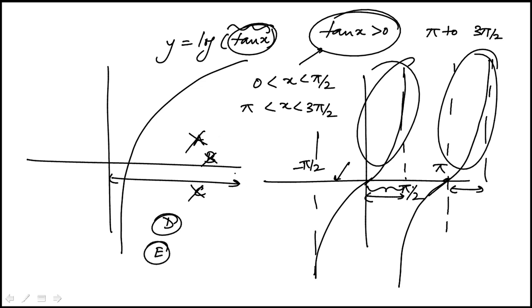You'll see we're looking at 0 to pi over 2, then pi to pi plus pi over 2. If you go another pi, it's 2 pi to 2 pi plus pi over 2, and you start to see the pattern.